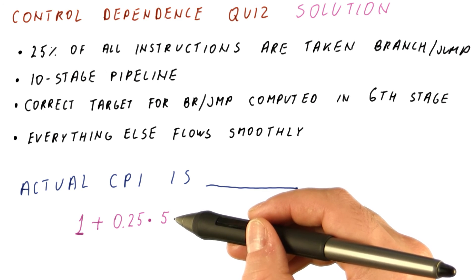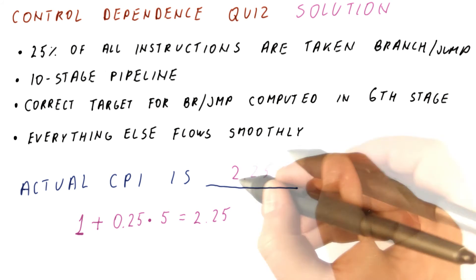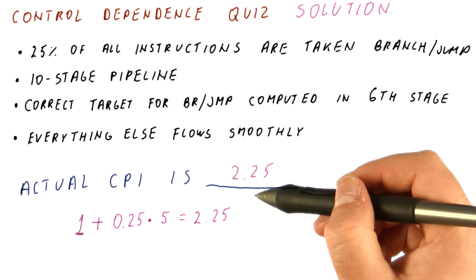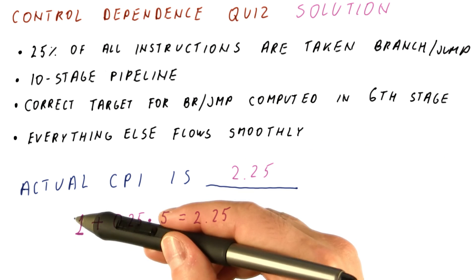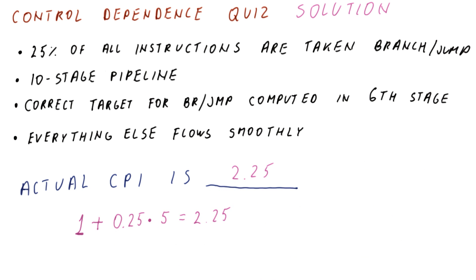Basically, there are five empty cycles after it. If you multiply this out, you get 2.25. As you can see, this CPI is very far from the ideal. Our processor is less than half as fast as it would be without the taken branches. All right, we'll see you in our next video. Bye-bye.